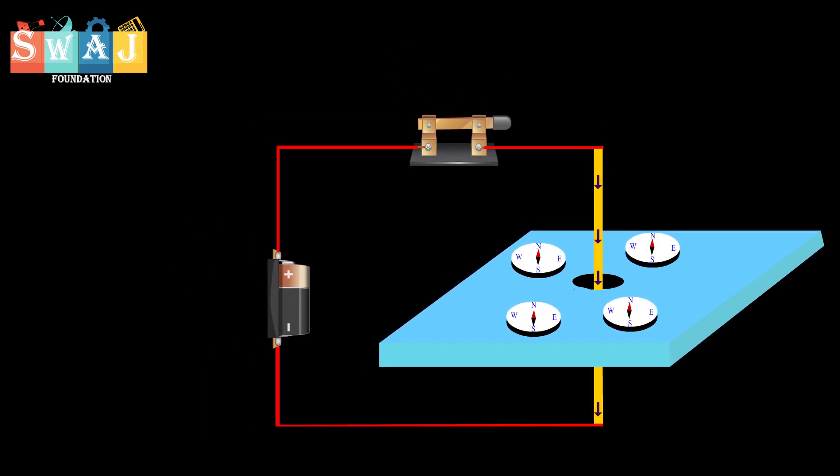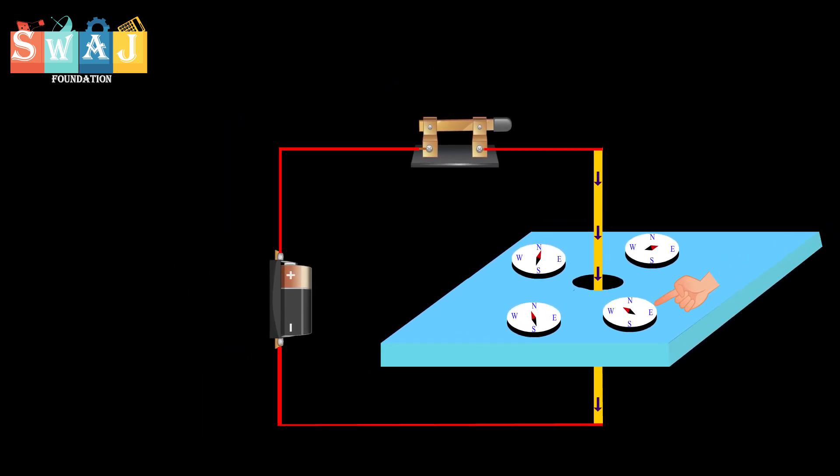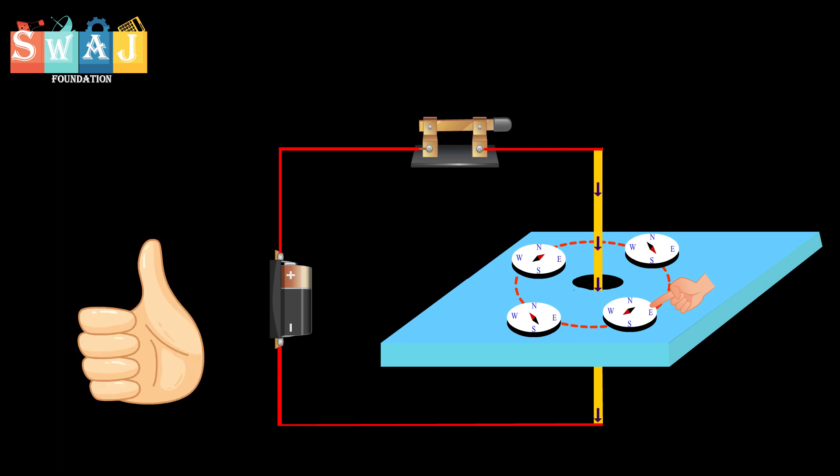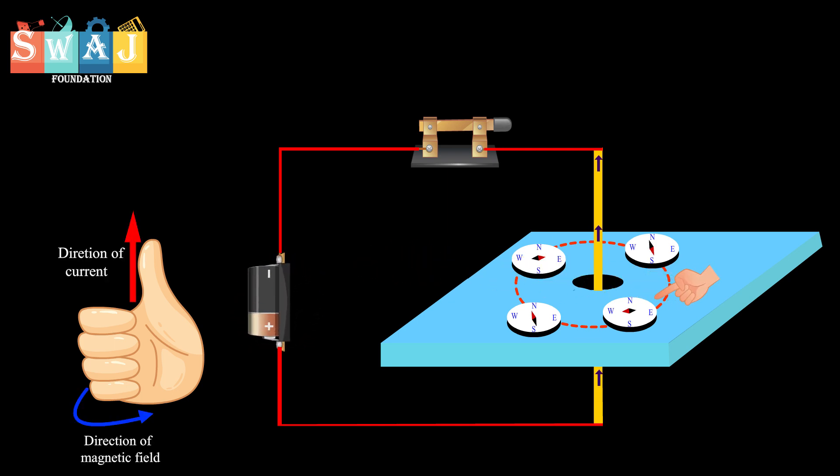The direction of the lines of force can be found by a rule concluded directly from the above experiment, which is stated as follows: if the wire is grasped in the fist of the right hand with the thumb pointing in the direction of current, the fingers of the hand will circle the wire in the direction of the magnetic field.